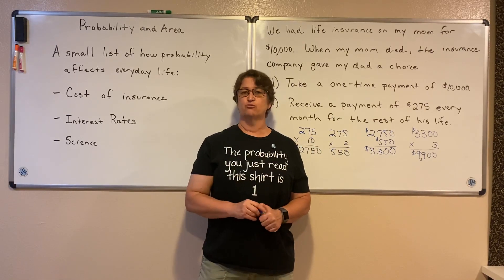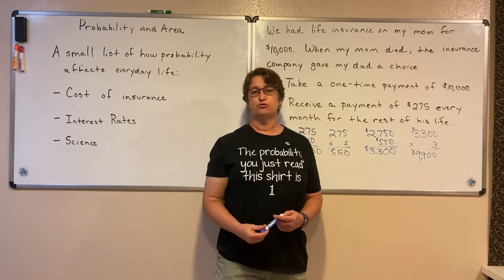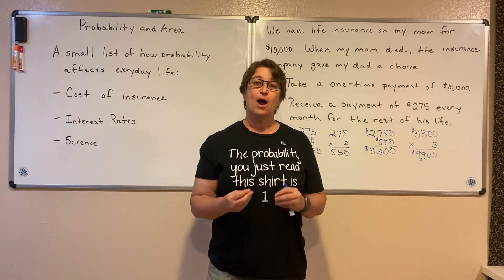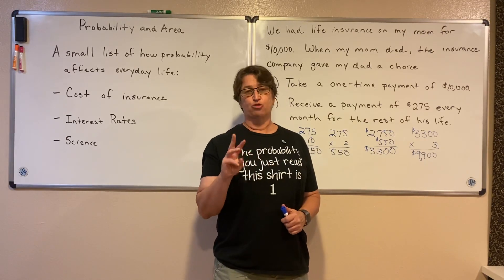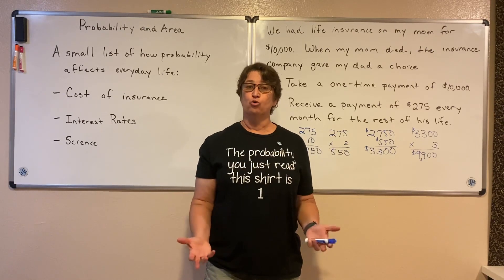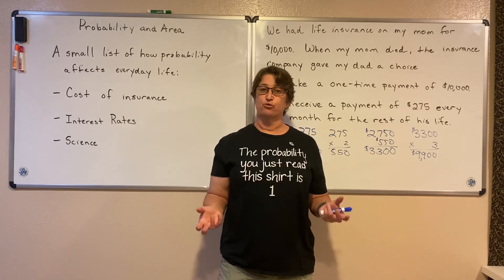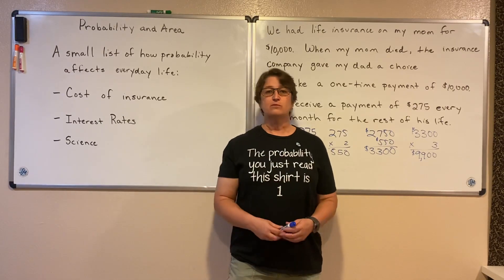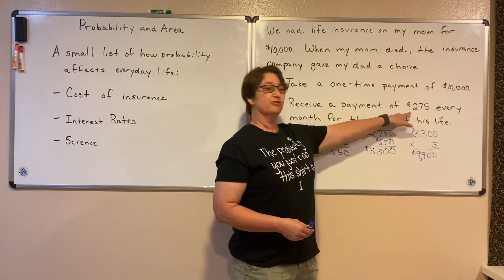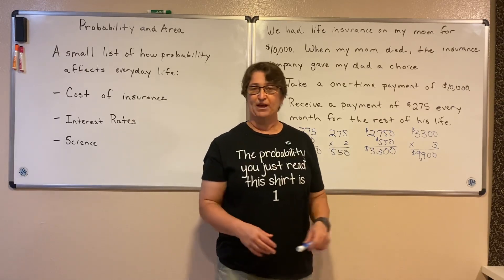So we started asking ourselves why they would want to give him a potential of more than $10,000 — why give him $275 a month? We looked into it and it turns out that if your spouse dies, the probability that you die within three years is really high. It makes sense because most of the time when your spouse dies, you're older, and so you're probably on the verge of death yourself. So it would totally make sense that within three years, my dad would die as well. Understanding probability, we decided that dad wasn't going to make it three more years, and instead of taking the $275 a month, we went ahead and took the straight-up payment of $10,000 to help pay for funeral costs.